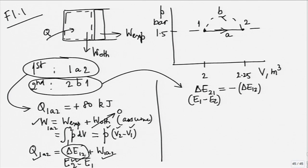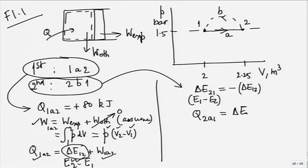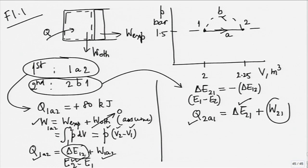We are given that the system rejects 100 kilojoules of heat. What is the work done? Apply first law - Q is the only law which relates Q to the rest of the world. For the second process: Q_2B1 equals delta E_21 plus W_21. Delta E_21 is minus delta E_12, which has been calculated and is known. Q_2B1 is given as minus 100 kilojoules. So the only unknown is W_21.